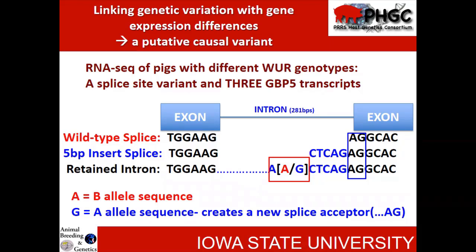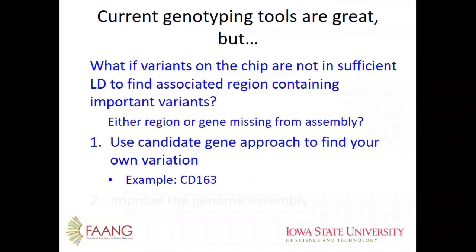Further work in the laboratory, by sequencing animals, identified a variant that could actually explain the gene expression differences. This variant changed the splicing of the RNA, and through additional work we were able to validate that. We now have a very strong candidate gene, and this has been published. That was an example of how to use genotyping tools to perhaps drill all the way down to the actual causative gene.